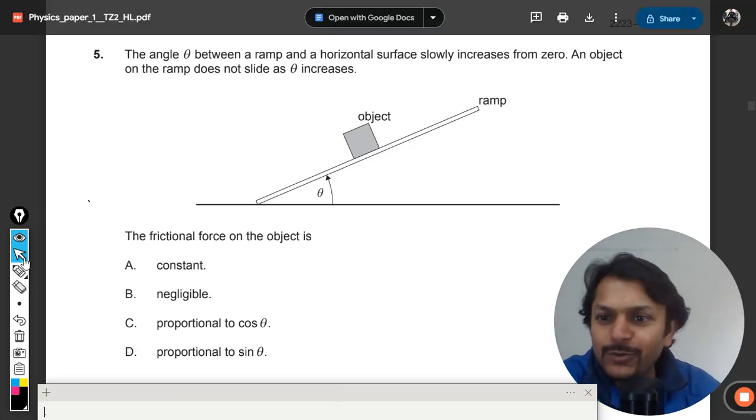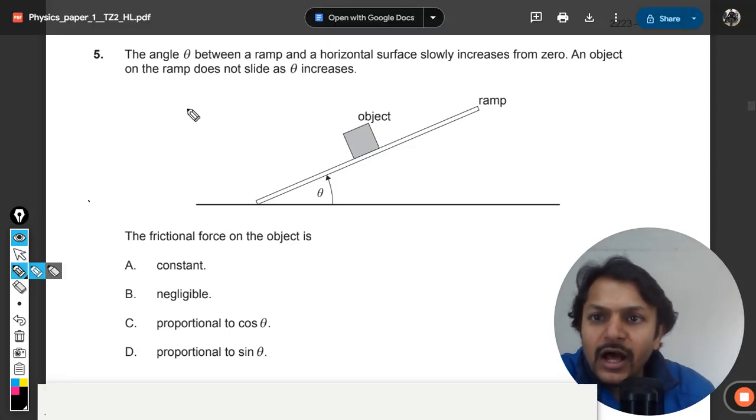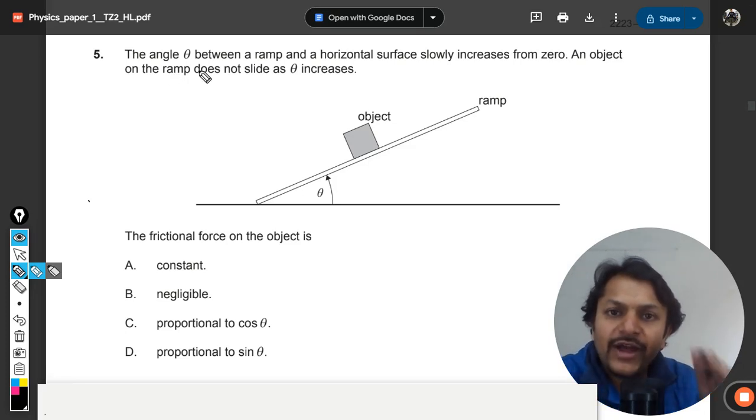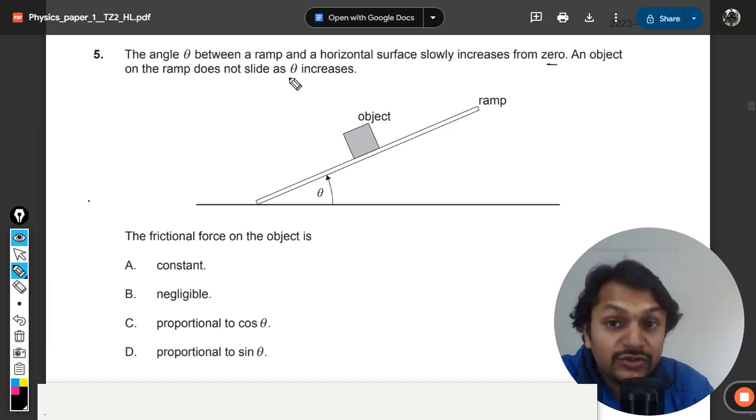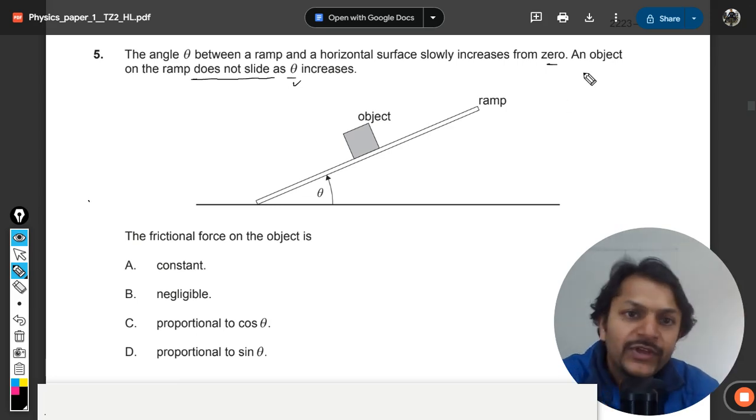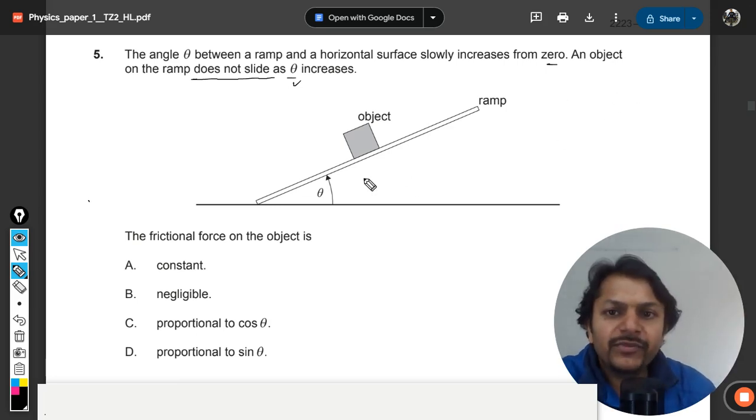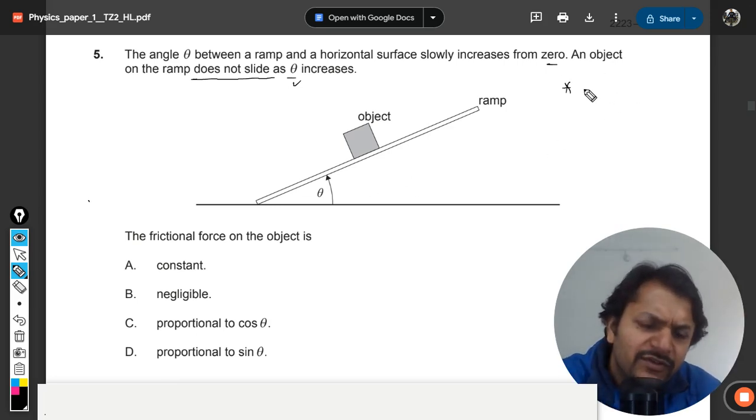Okay dear students, let's see what is there in this question. The angle theta between the ramp and the horizontal surface slowly increases from zero. An object on the ramp does not slide as theta increases.